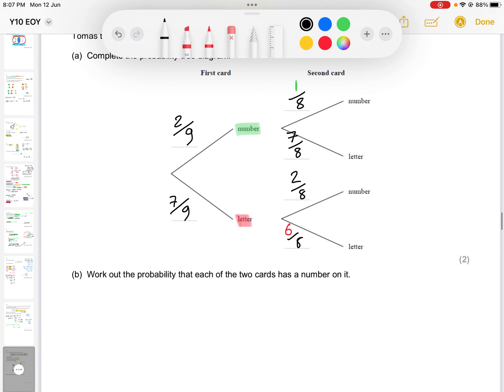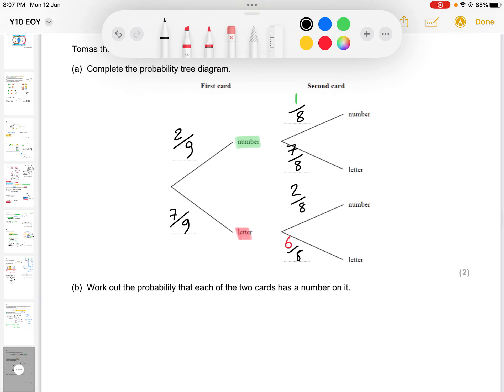Part B, work out the probability that each of the two cards has a number on it. So what we need here is the probability of getting a number and then another number. So we need to get a number on the first selection and we need to get a number on the second selection.